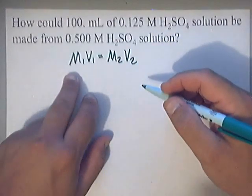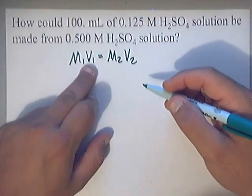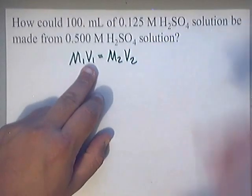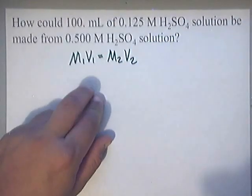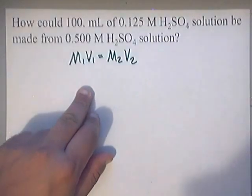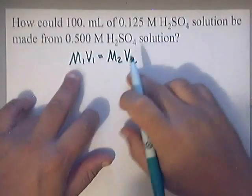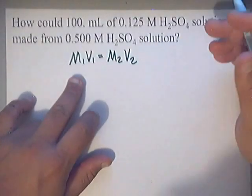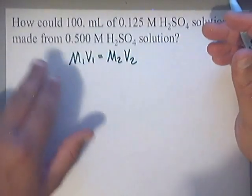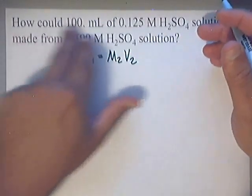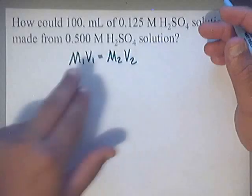You should use the following formula: M1V1 = M2V2, where M is molarity and V is volume. We're going to take the given information and plug it in.